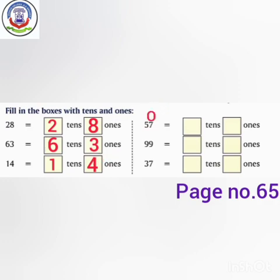We have to write 1s here and 10s here. How many 10s do we have? We have 5 tens. How many 1s do we have? We have 7 ones. So here we have 5 tens and 7 ones. Next is 99.